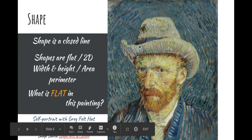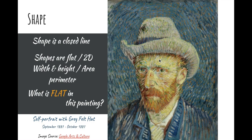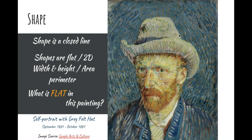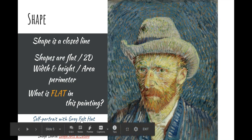Next up we have shape. Shape is a closed line — so the head meets the tail, the start meets the finish of a line, and then it becomes a shape. A shape is flat. It's two-dimensional. A shape also has a width and height. It also has area and perimeter. The units for shape are squared. So here's a question for you: what is flat in this painting? I want you to think about what's flat, or two-dimensional.